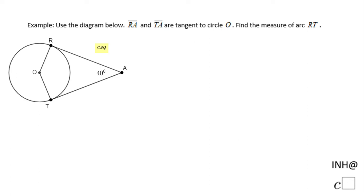Welcome back to iNeedHelp@cSquare. In this example we have a circle and we notice segments RA and TA are tangent to circle O. We need to find the measure of arc RT, how many degrees in that arc RT.